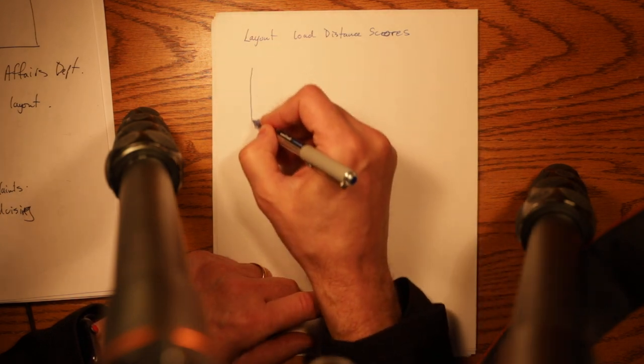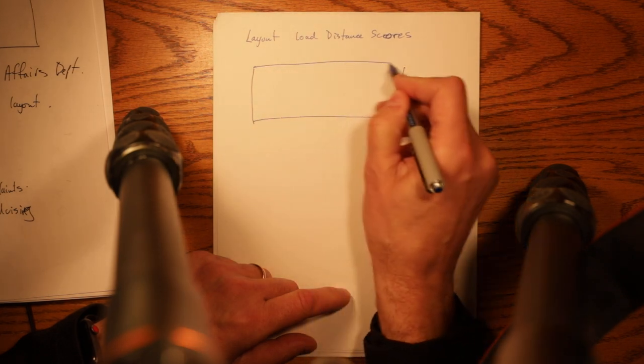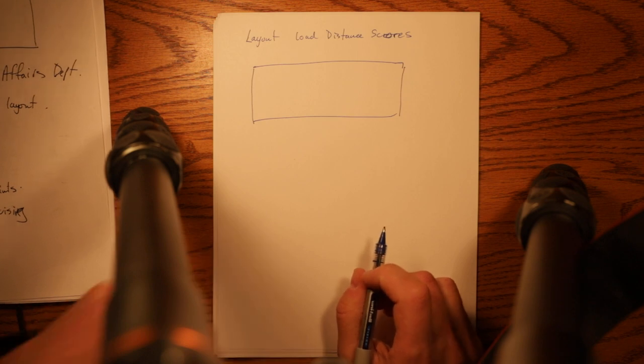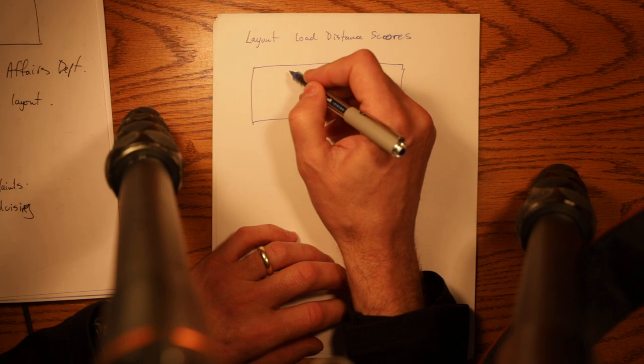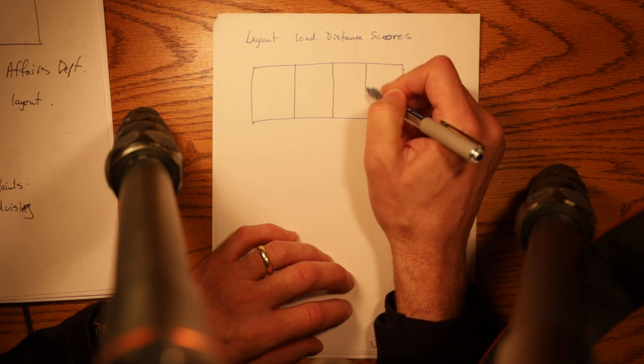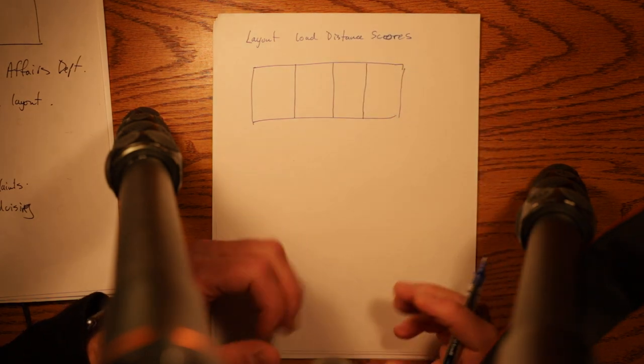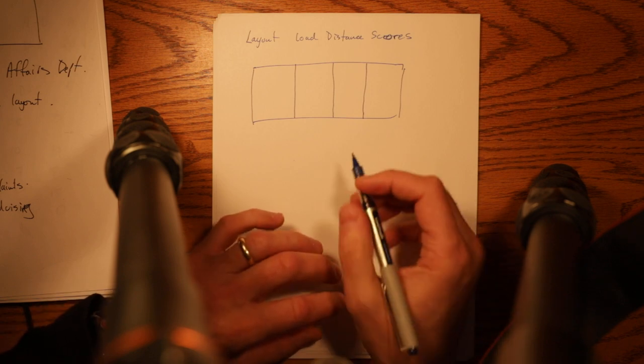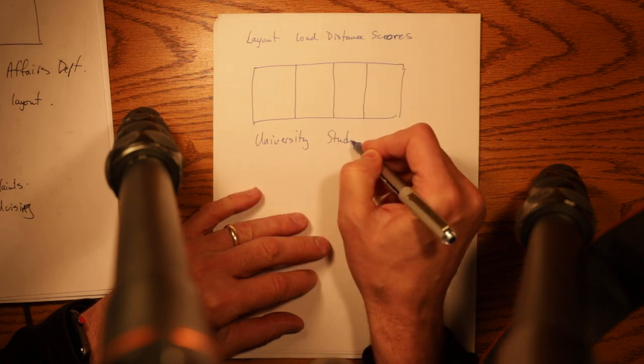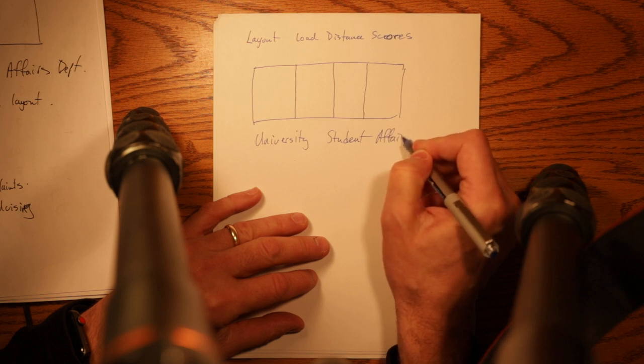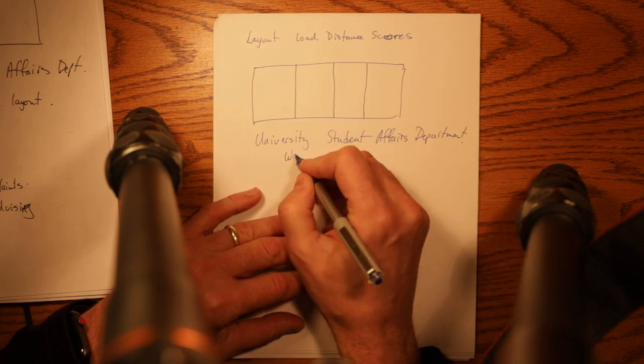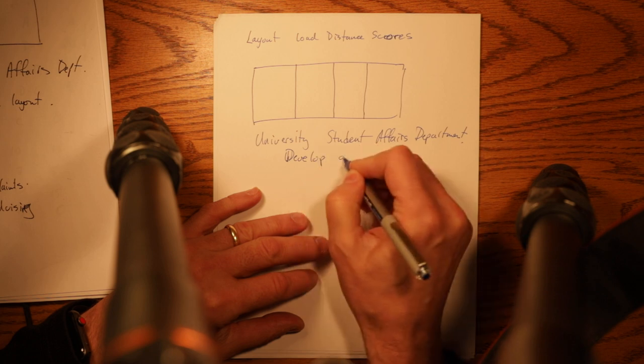So I'm going to do a fairly straightforward one to start. As always I will post, if not exactly what I write here, the notes that I've used because I have them in PDF format. This one I'm going to do is a relatively straightforward one. I have a horizontal space where I have four similarly sized departments and the question will be given this university student affairs department, develop a good layout.